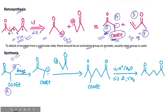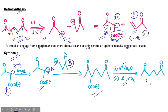The activating group used is mostly the ester group, as you will see in this example. For the synthesis, we start with synthetic equivalent A, which has an activating group. The enolate forms on this particular side. This synthetic equivalent reacts under base conditions — the acidic hydrogen is abstracted, the electrons shift, and you see the negative charge forming the enolate species. Then synthetic equivalent B comes and forms a bond with this compound. After that, we perform decarboxylation, and you will see the product formation.